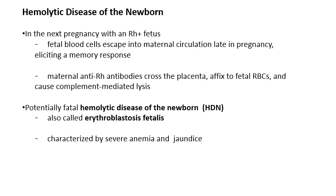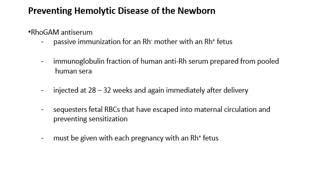There is a way to prevent this. We can inject an antiserum called RhoGAM to prevent mom from producing antibodies against her own fetus. It's given at about 28 weeks of pregnancy and again at birth for every Rh positive pregnancy — but only if the mother is Rh negative. This passive immunization prevents hemolytic disease of the newborn, or erythroblastosis fetalis.